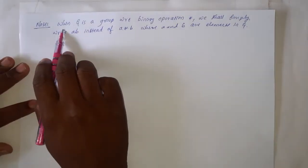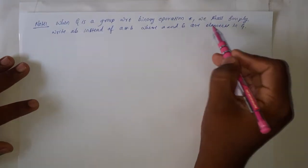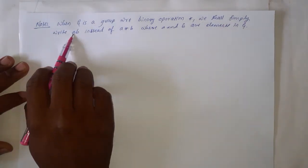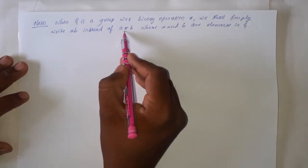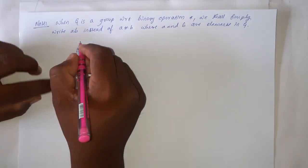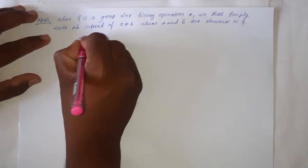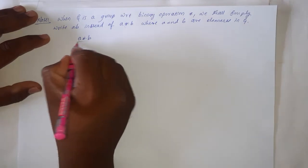Hello dear students, welcome to mathematics class. In this class, let us discuss some properties of a group. Before going to start the properties, one note is that when G is a group with respect to a binary operation star, then we shall simply write ab instead of a star b, where a and b are elements in G. While proving the theorems or some properties, it is not necessary to write a star b everywhere.